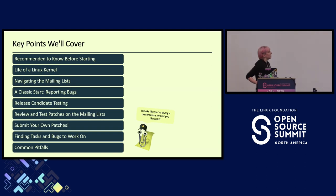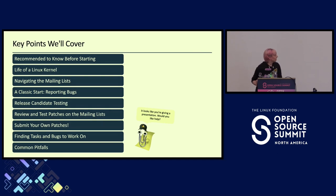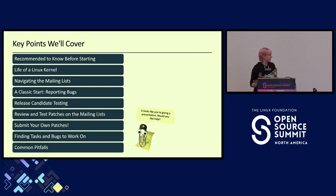I'll give you a little review of what we'll cover: the recommended knowledge before starting, the life of a kernel from where it gets started and running through the development cycle through end of life. Then different ways you can get involved — from reporting bugs, testing release candidate kernels, reviewing and testing patches on mailing lists, how to submit your own patches, finding tasks and bugs to work on, and then those common pitfalls that Alan will help with.